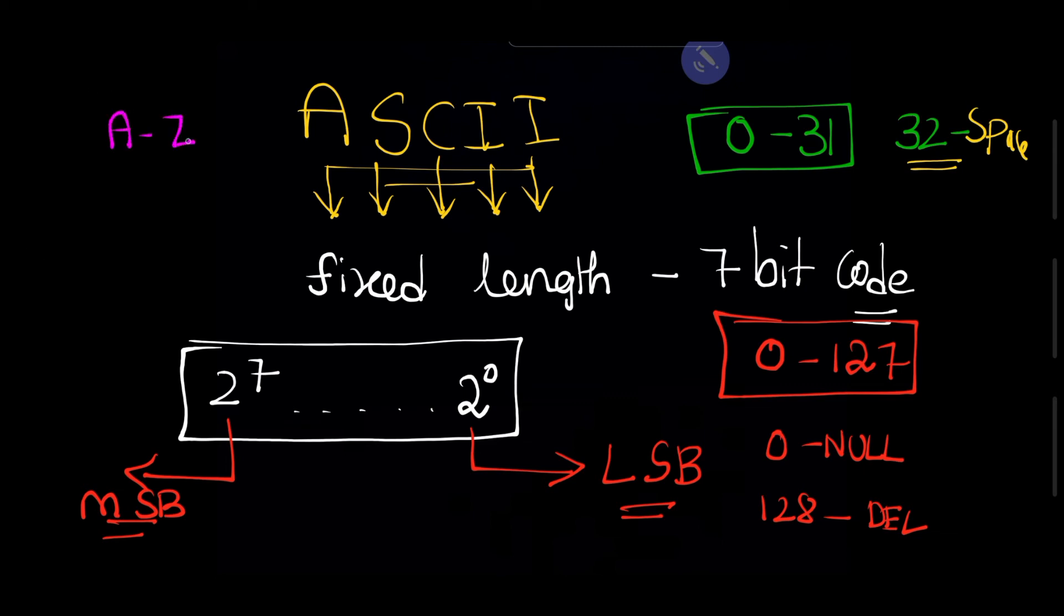The most frequently used ASCII codes are capital A to capital Z. Capital A ASCII code is 65 and capital Z ASCII code is 90. Similarly, small a and small z.